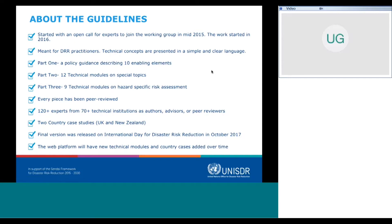The guideline has three parts. All parts and pieces have been peer reviewed. In total, throughout one and a half years, about 120 experts from 70 institutions have been contributing as authors, advisors, or peer reviewers. There are two country cases right now from the UK and New Zealand included in the guideline. The final version was released about two and a half weeks ago on October 13, 2017, on the International Day for Disaster Risk Reduction. There is a web platform online with all pieces and modules, and new technical modules, topics, and country cases will be added over time.